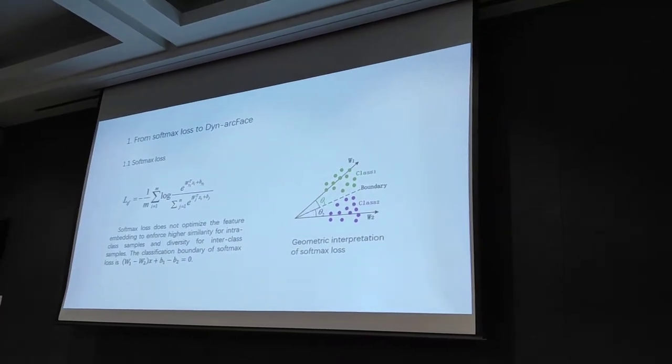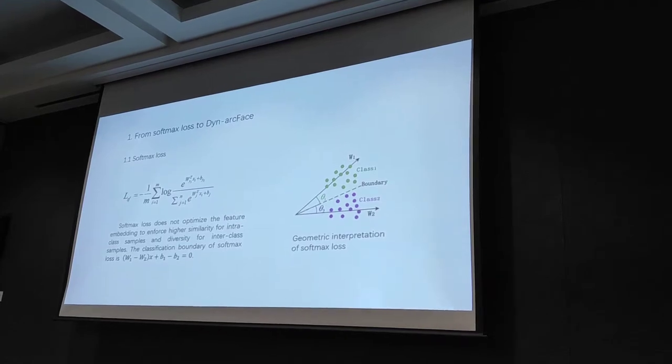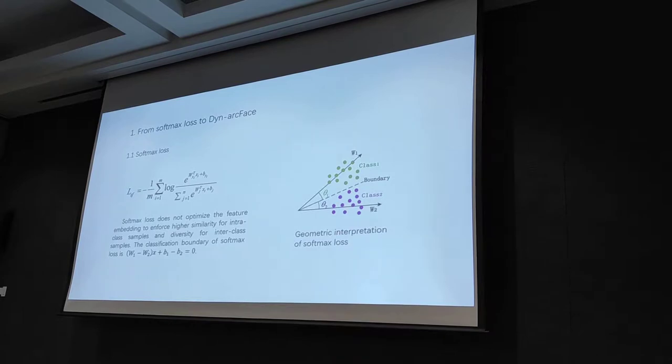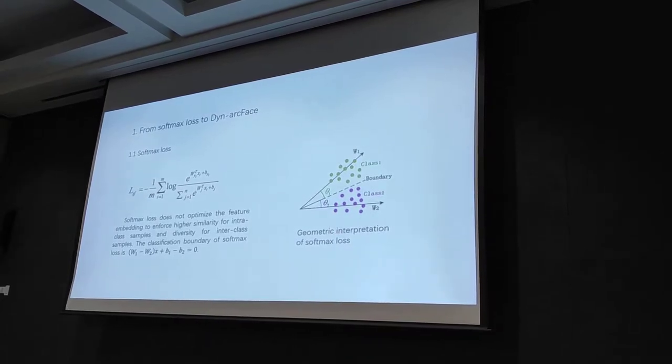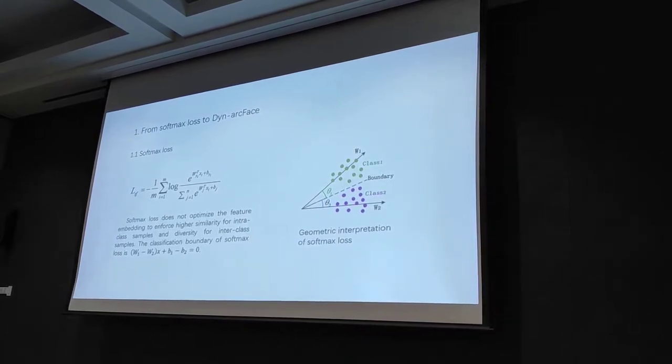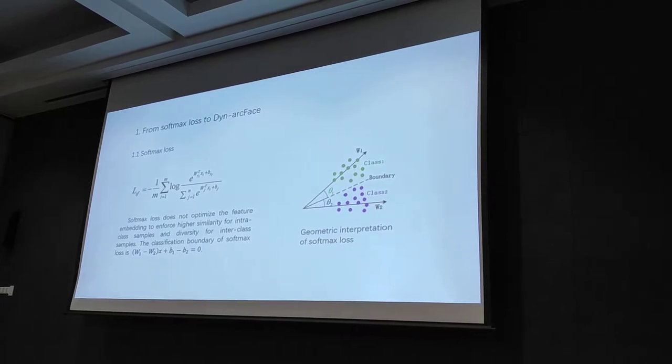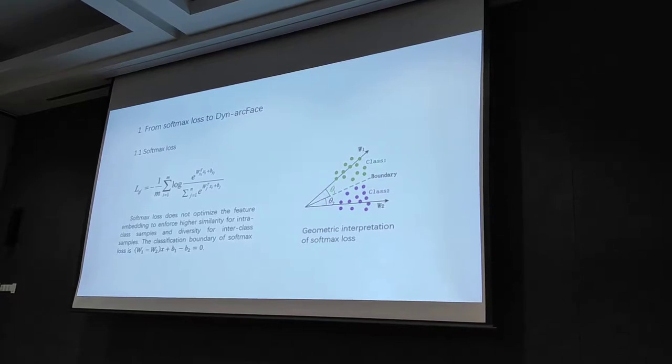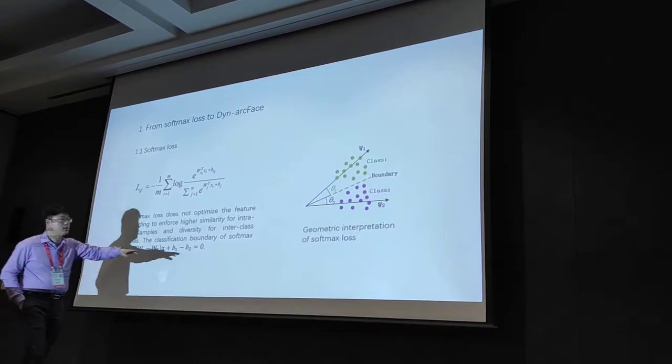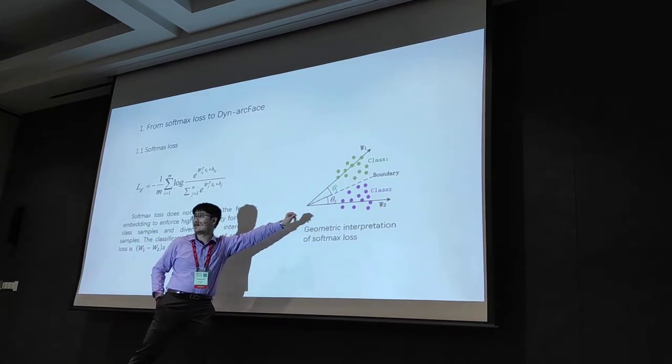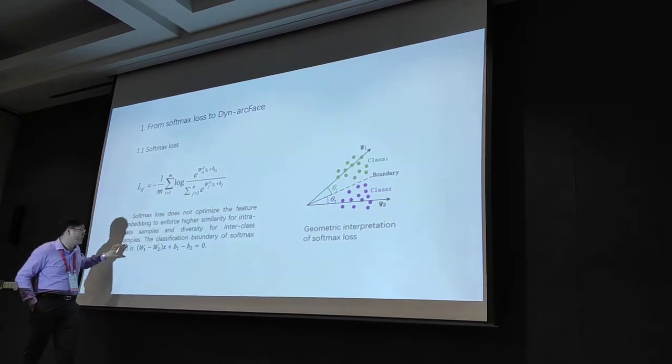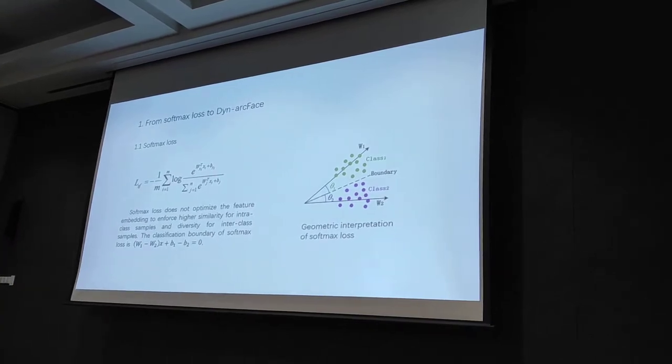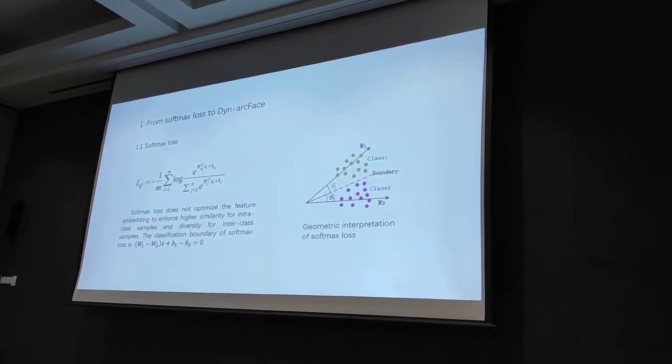This paper starts with a brief review of Softmax. Typically when people want to train face feature representation models, they use Softmax as a loss function. As you can see from this figure, the boundary between two classes of Softmax is defined by this equation. Basically, the weighting factor and the bias factor together define the boundary.